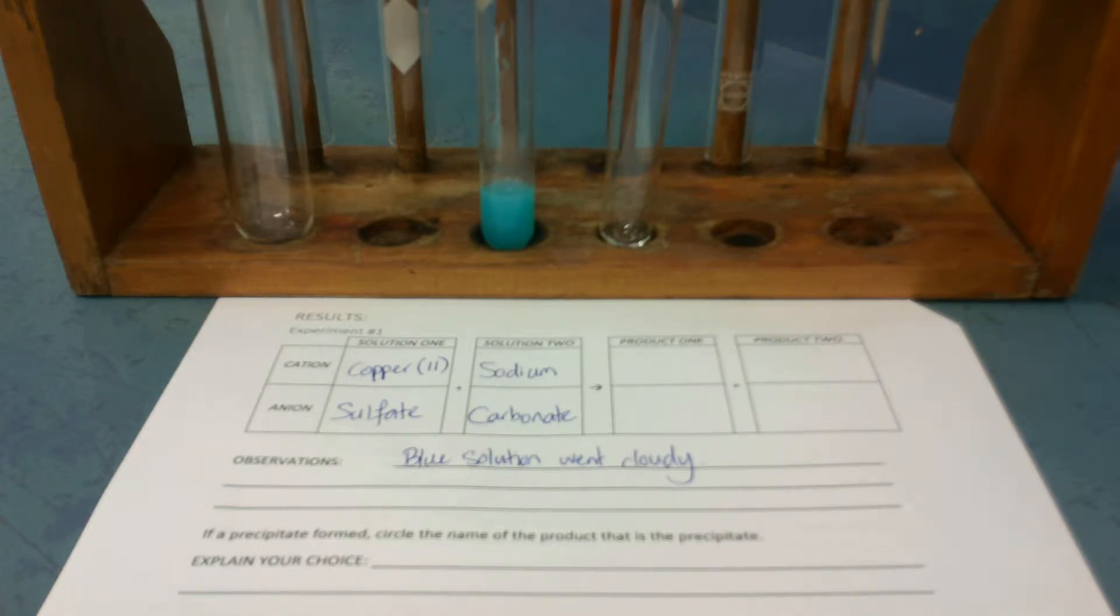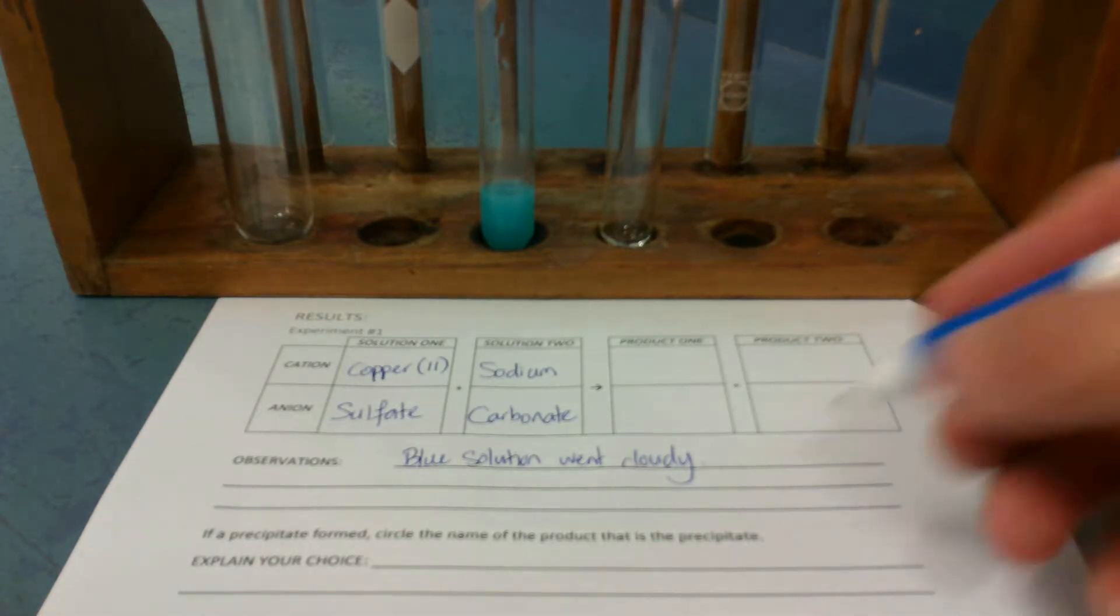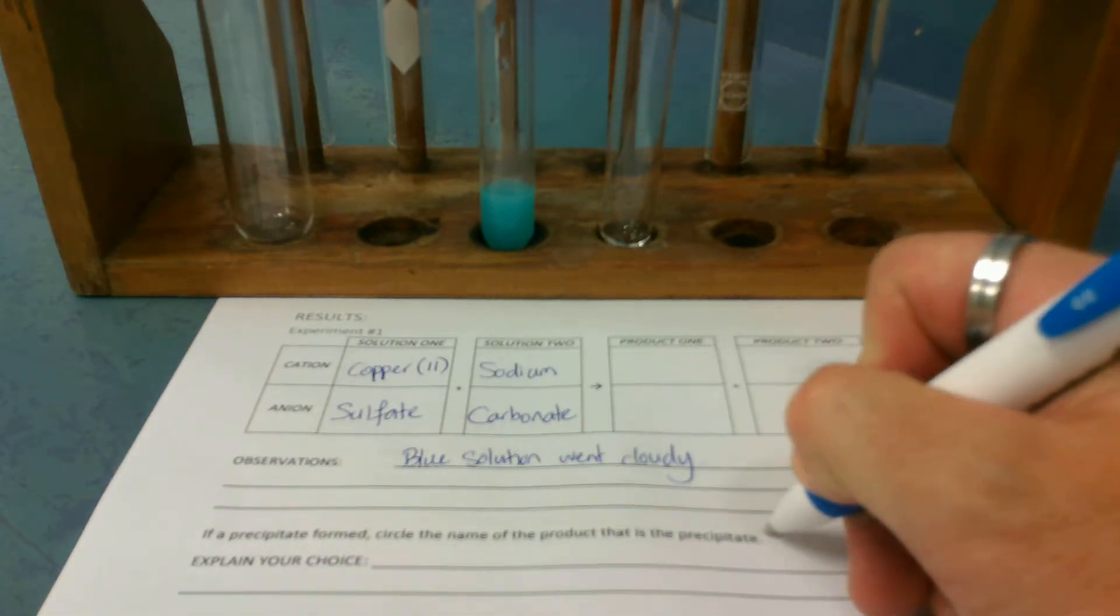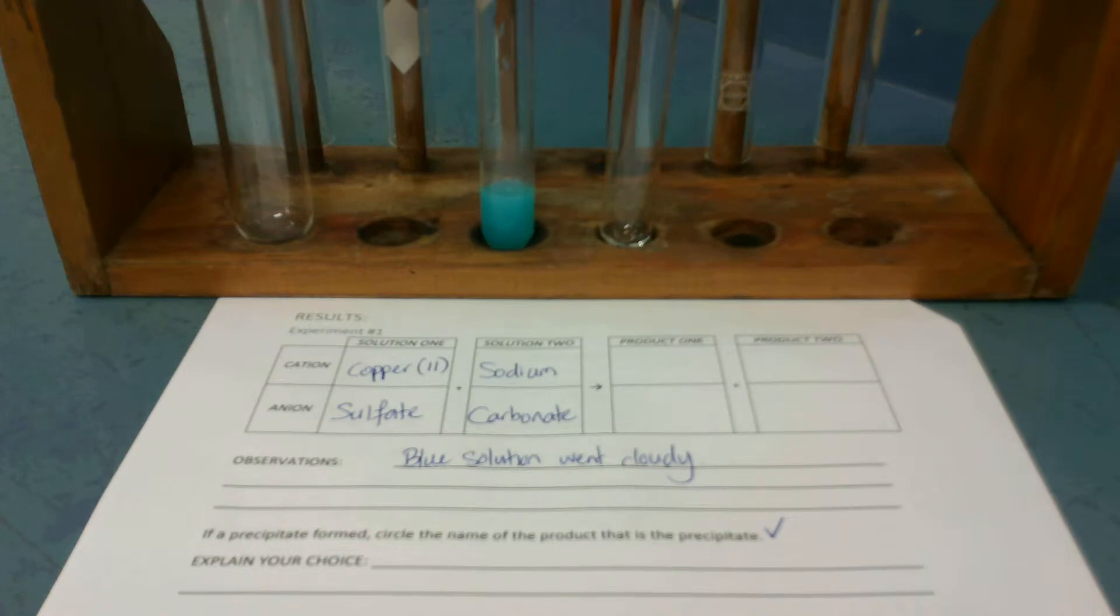Then what we have to do is work out what's happened. And we know that a solid was made, so we know there was a precipitate. So I'm just going to put a wee tick next to where it says, if precipitate formed. I'm going to put a wee tick there, just to tell myself that I'm going to need to circle something in a moment.